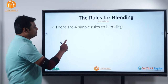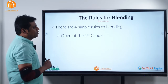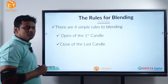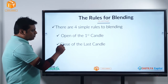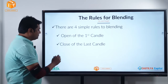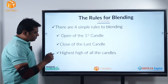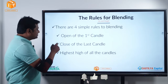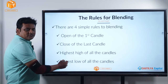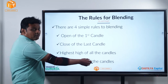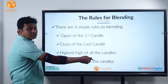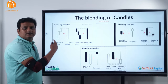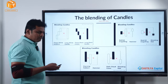So what are the rules for blending? There are four simple rules. Rule number one: open of the first candle. Rule number two: the close of the last candle. Rule number three: the highest high of all the candles. And finally, rule number four: the lowest low of all the candles. Sounds good — now let's get into the art of joining a few candles.